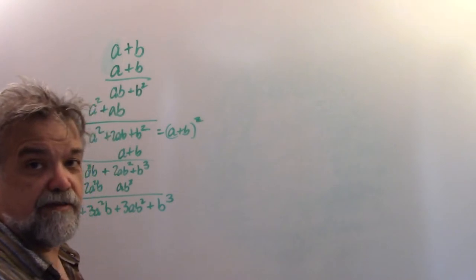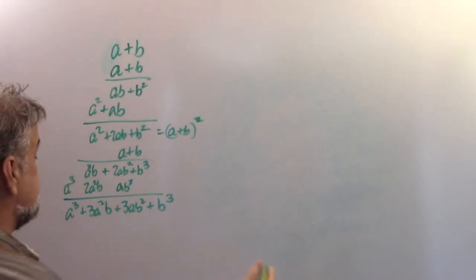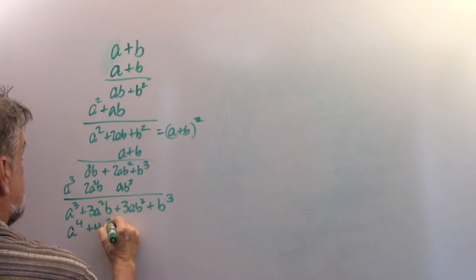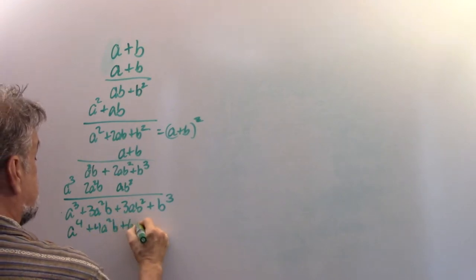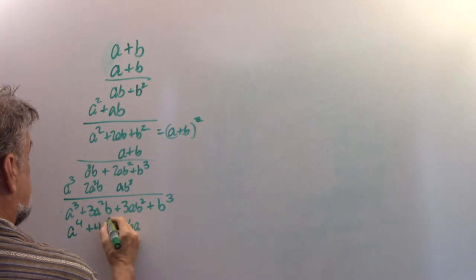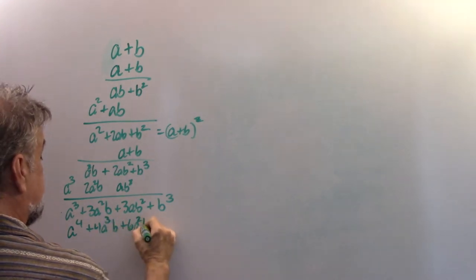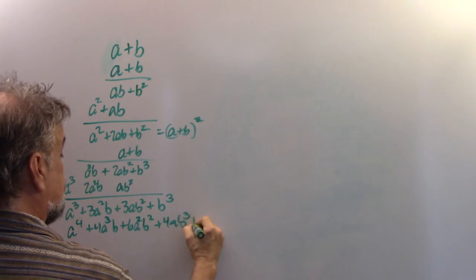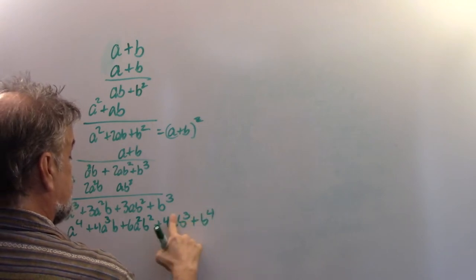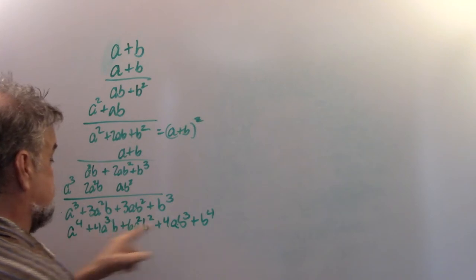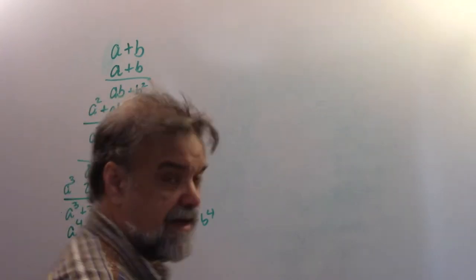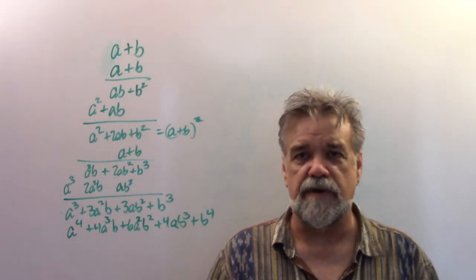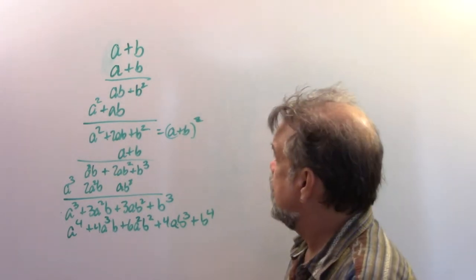If I were to do it again — I won't do it in front of you — I would get a to the fourth plus 4a-cubed·b plus 6a-squared·b-squared plus 4ab-cubed plus b to the fourth. Is there a pattern? The answer is yes.